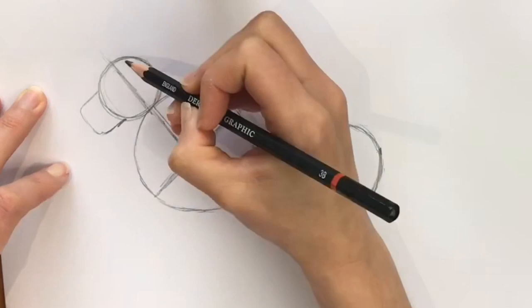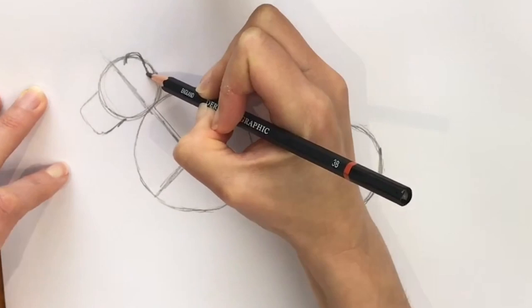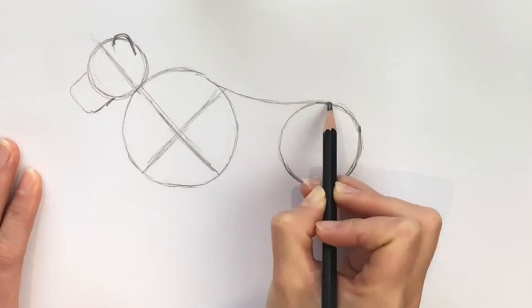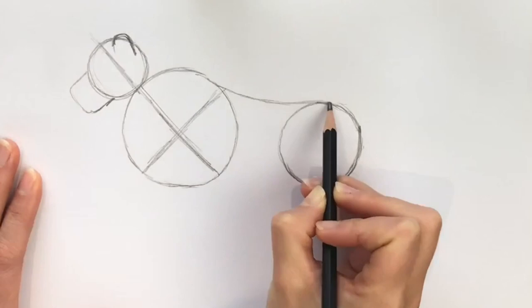Next step is to draw the back, so we're going to join up these two circles. Just draw a slightly curved line going from one circle to the other, and then the belly, which is going to start round about there, a bit more of a curved line that will come up to this one here.